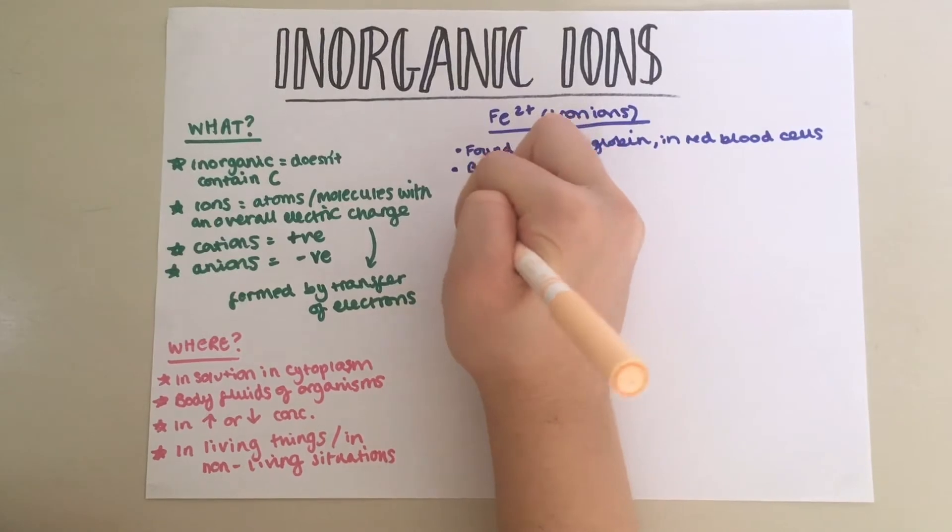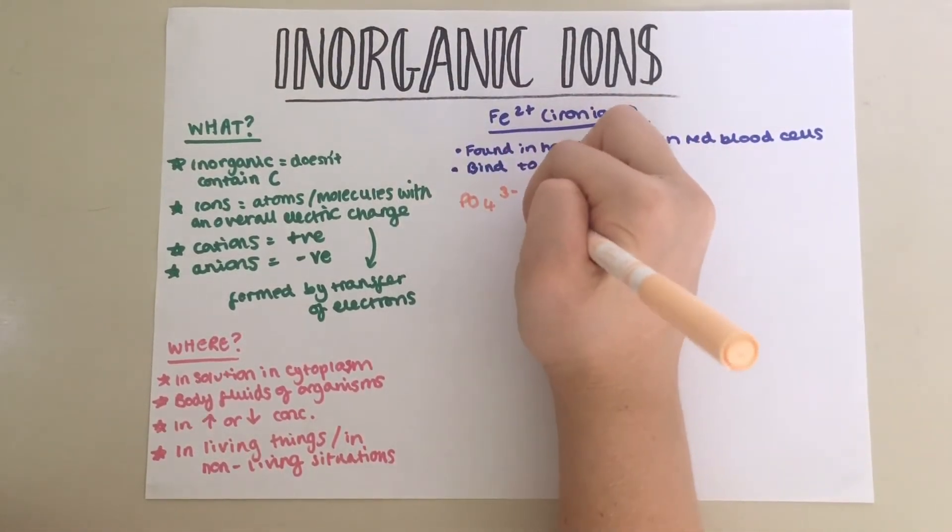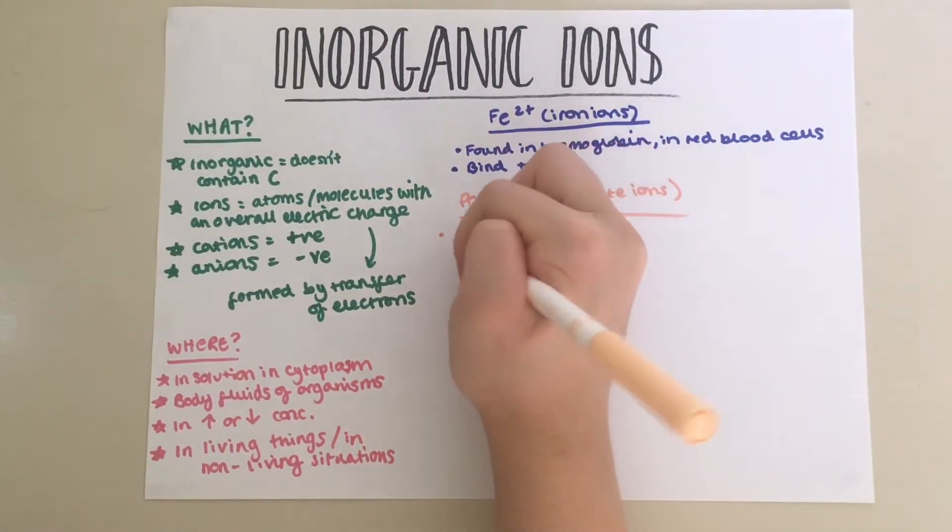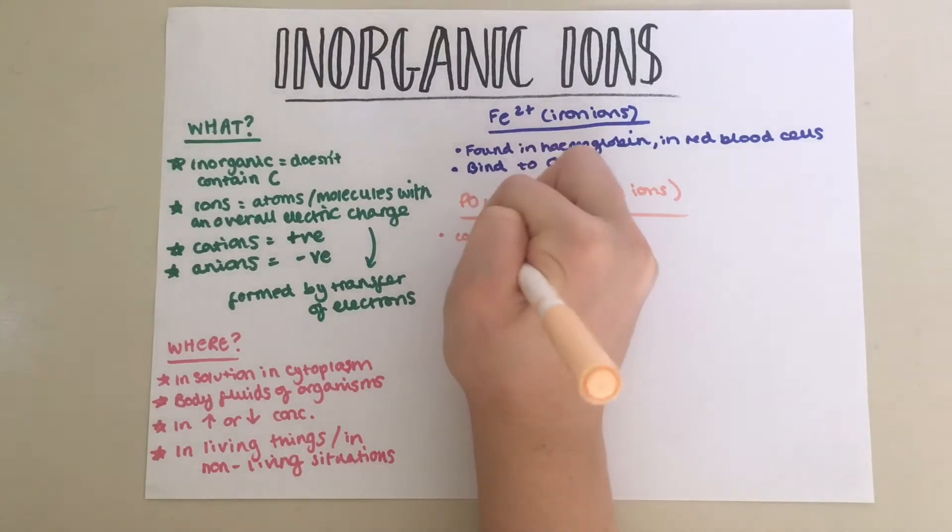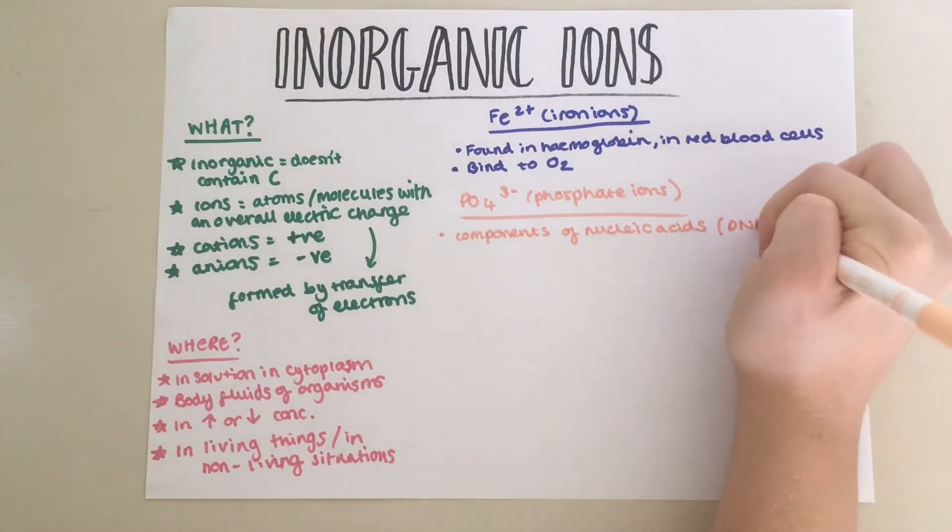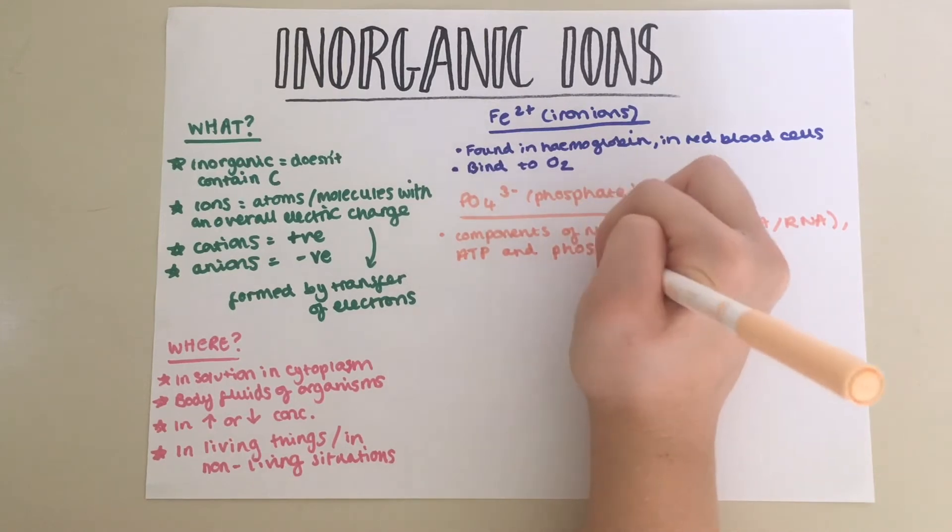Next, we have phosphate ions, also known as PO4 3- ions. Phosphate ions are important because they are components of nucleic acids such as DNA and RNA, ATP, and phospholipids in the cell membrane.